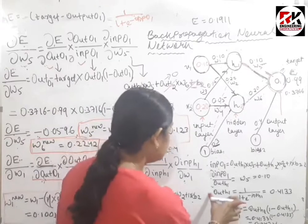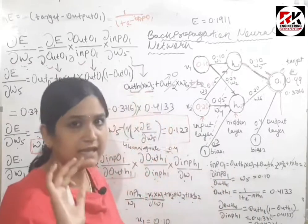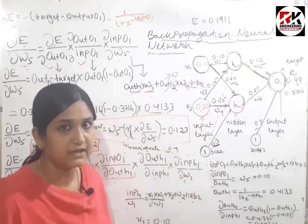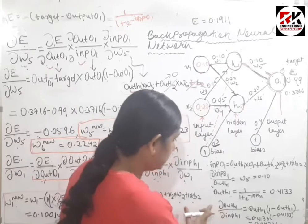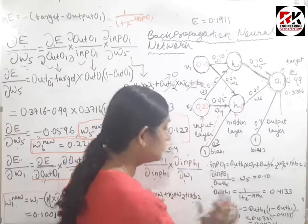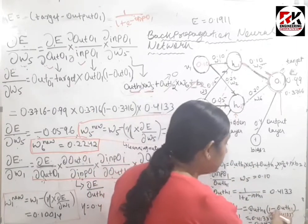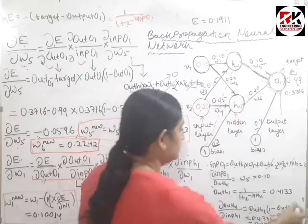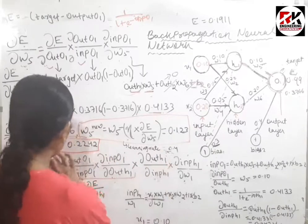Next: ∂out(h1)/∂in(h1). The output of h1 is the sigmoid function applied to input(h1), giving out(h1) = 0.4133 from the previous session. The partial derivative of the sigmoid gives out(h1) × (1 − out(h1)) = 0.4133 × (1 − 0.4133) = 0.2424.